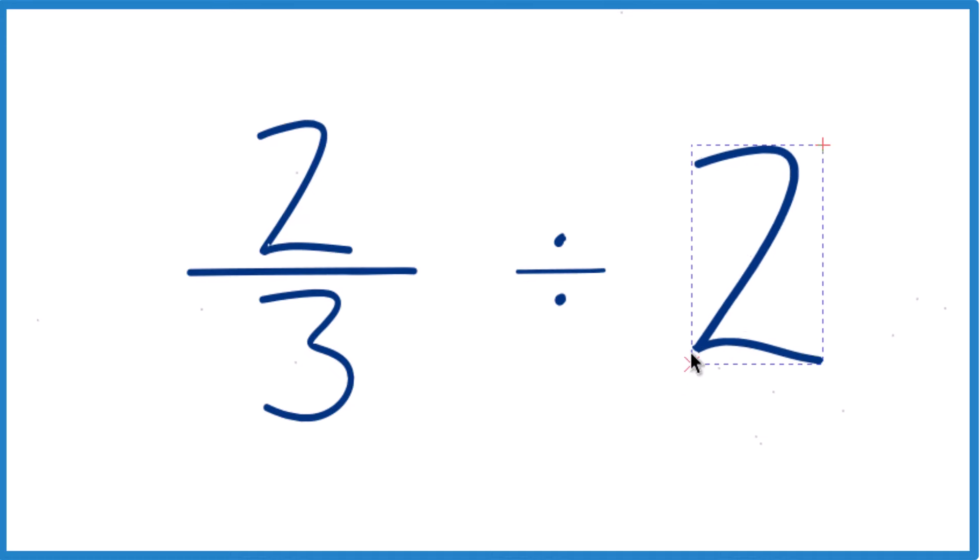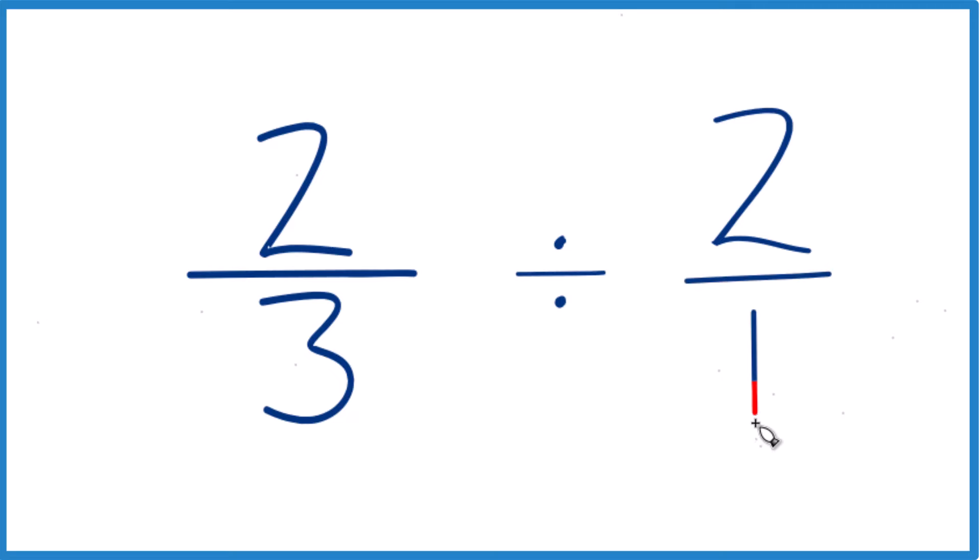Next, we're going to take this two here, and instead of two, we're going to call it two over one, because two divided by one, that's still two.